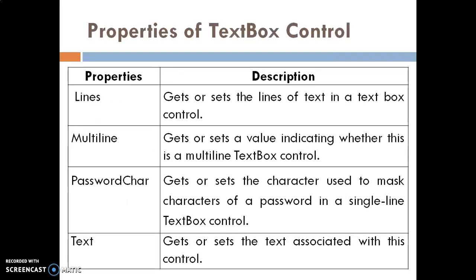These are the common properties of text box control. The first property is Lines — it is used to get or set the lines of text in a text box control. The second property is Multiline — it is used to get or set a value indicating whether this is a multiline text box control. The next property is Password Char — it is used to get or set the character used to mask characters of a password in a single-line text box control.